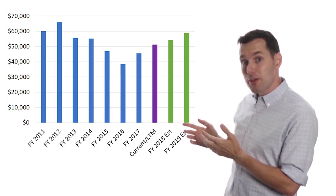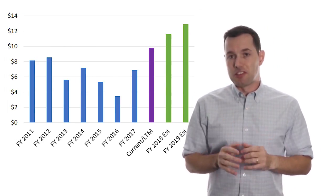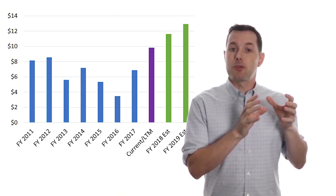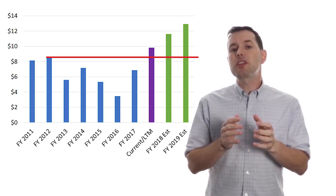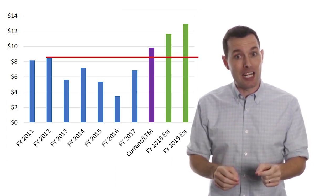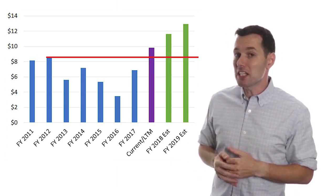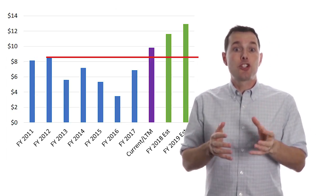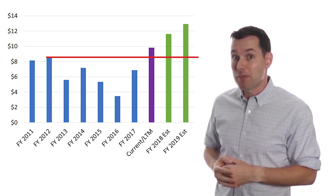Now we can swap out that revenue chart with an earnings per share chart and we can see a similar story. The primary difference to me is that where revenue topped out in 2012, earnings per share has recovered nicely over the past 12 months, enough to surpass the 2012 EPS level. EPS projections out to 2019 look like Caterpillar should be rolling along nicely from a profit standpoint.